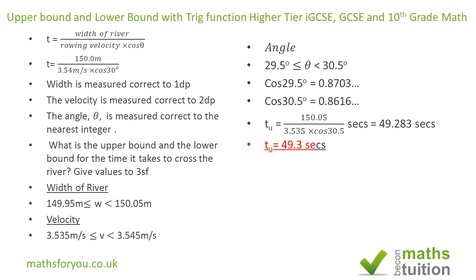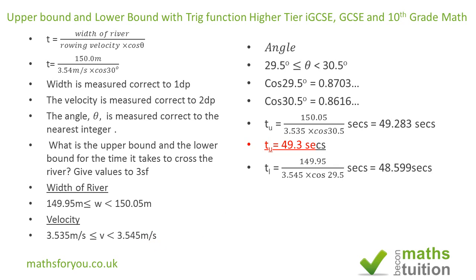For the lower bound time T_l, we use the least possible value for the width — 149.95 meters — divided by the maximum values for velocity, 3.545 meters per second, and the maximum value for cos theta, which is cos 29.5°. This gives 48.599 seconds, equal to 48.6 seconds to 3 significant figures.